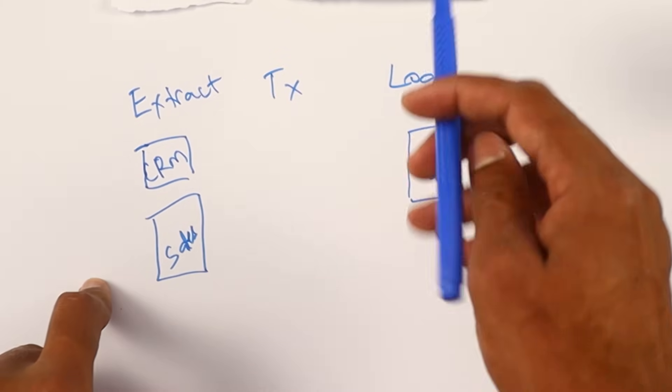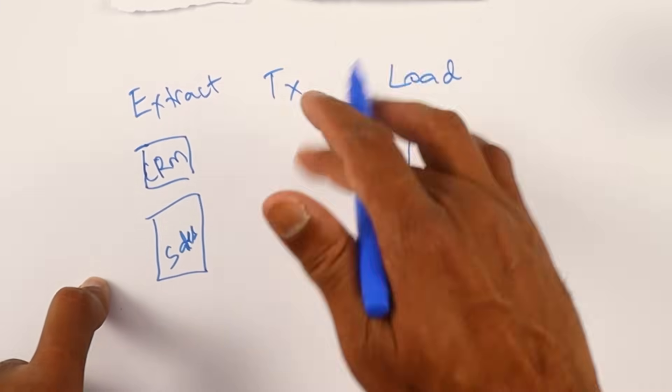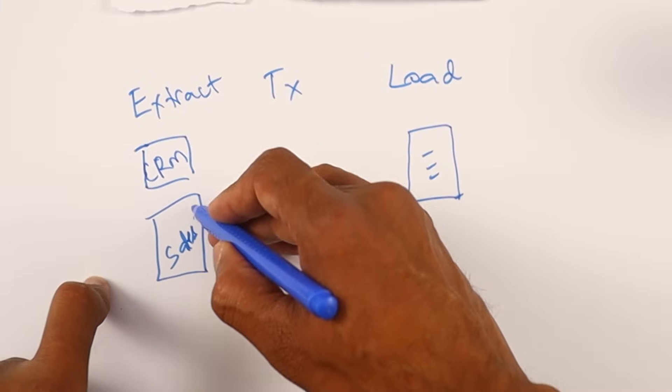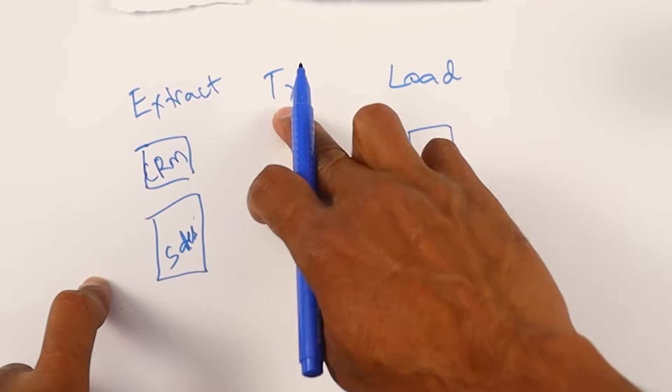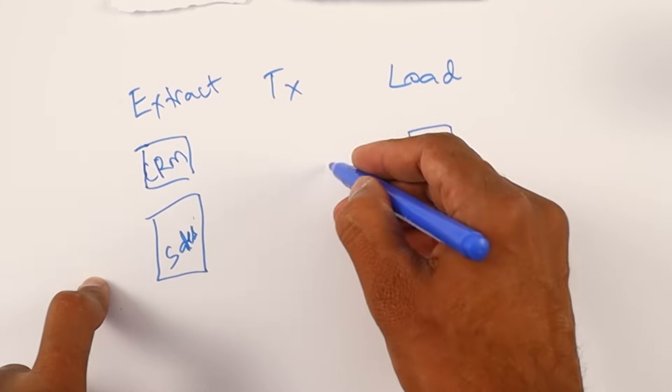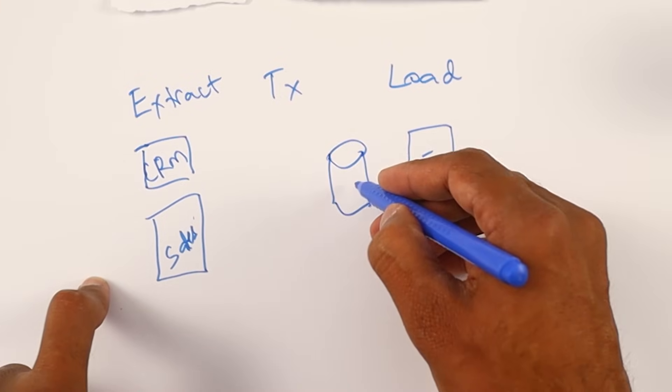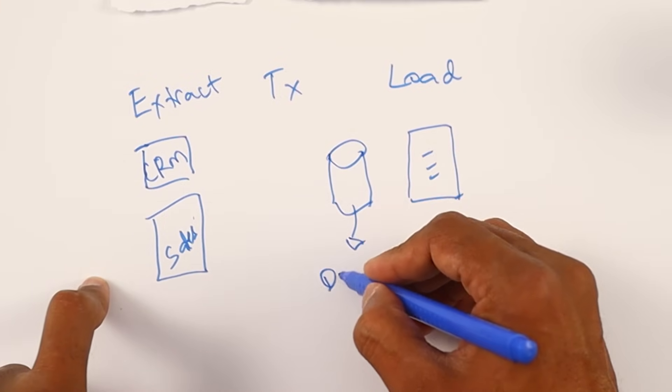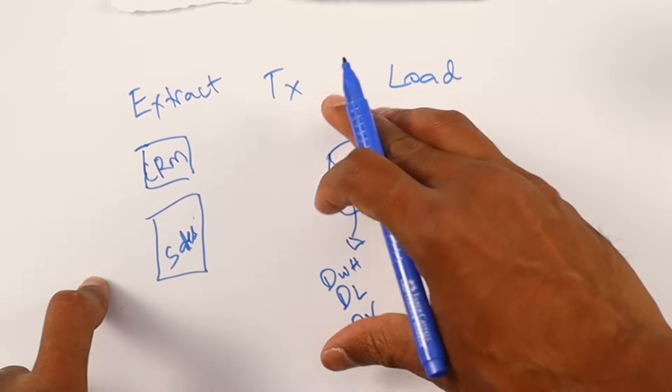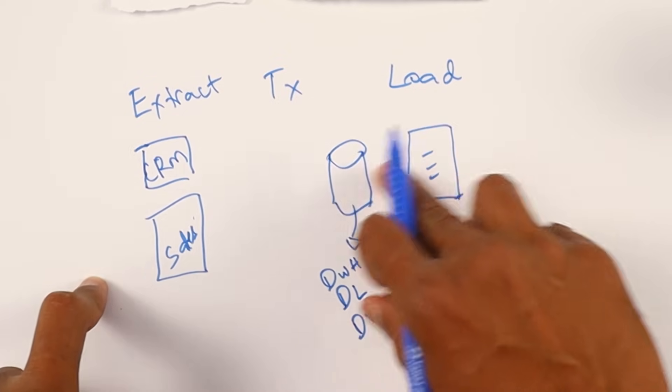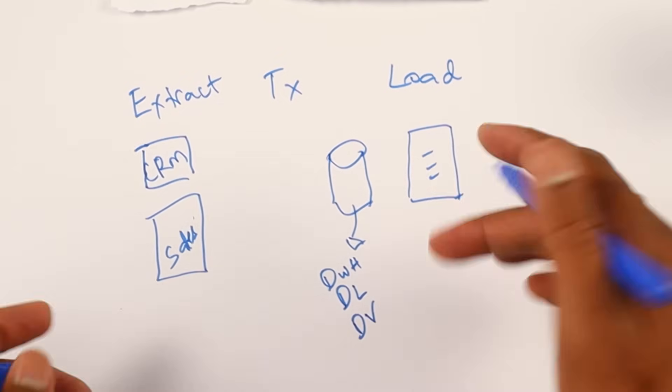This is where ETL comes into picture. With ETL, what companies do is they periodically extract the data from their business systems, apply some business rules to transform the data, that is the T, and then load it to a place where such transformed data is maintained. Usually this place will be a data warehouse or a data lake or a data vault. Once the data is maintained here, you can then connect to this to build your reports. We'll talk more about this in the real world example section.